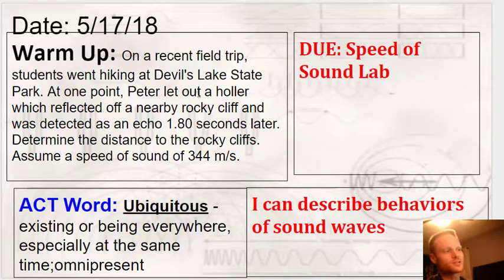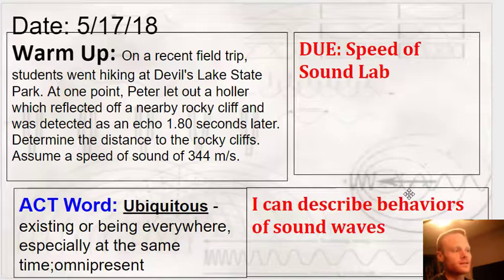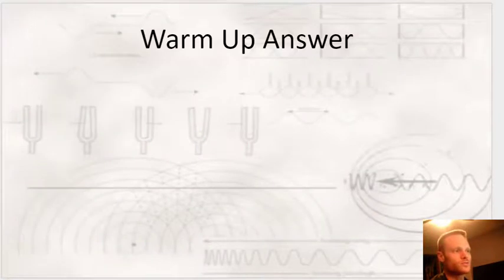Let's take a look at this warm-up question. On a recent field trip, a student went hiking at Devils Lake State Park. At one point, the student named Peter let out a holler which reflected off a nearby rocky cliff and was detected as an echo 1.8 seconds later. Determine the distance to the rocky cliff, and assume the speed of sound is 344 meters per second.